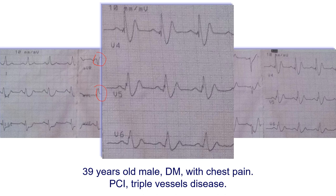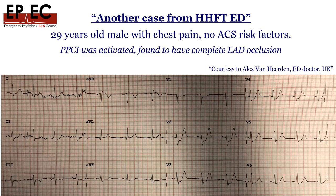That patient was found to have triple vessel disease and had a successful PCI for the LAD. Another example from Hampshire Hospital involved a 29-year-old male with chest pain and absolutely no ACS risk factors. The cath lab was activated because the ECG clearly showed the De Winter sign in V2, V3, and V4. He was found to have a completely occluded LAD that was successfully stented — a great save.